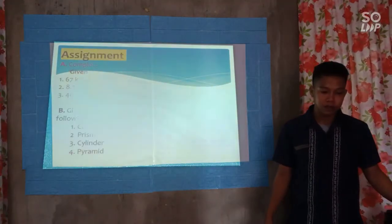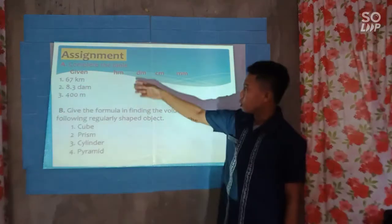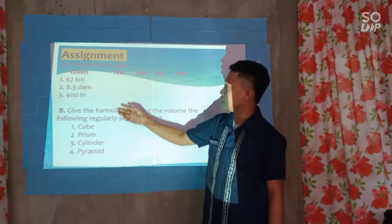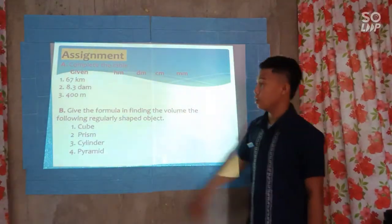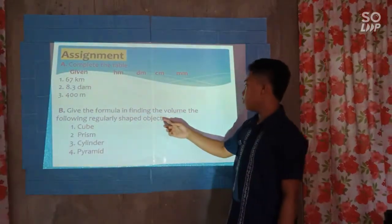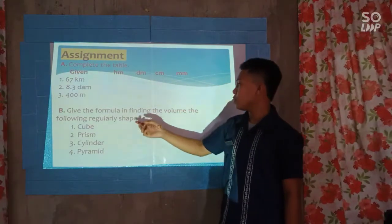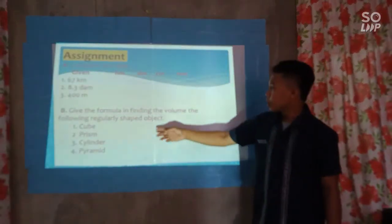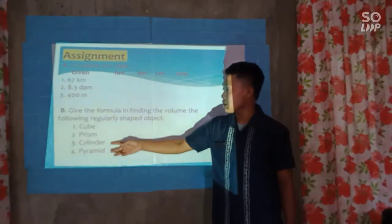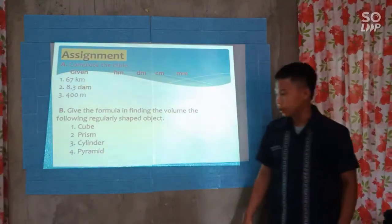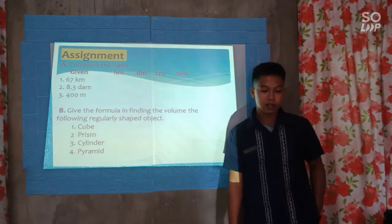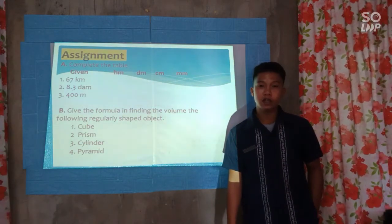For your assignment class, copy this in your notebook. Complete the table: number one, 67 kilometers; number two, 8.3 decameters; number three, 400 centimeters. Letter B: give the formula for finding the volume of the following regularly shaped objects — number one cube, number two prism, number three cylinder, number four pyramid. Are you done class? That's all for today. Class, dismissed.